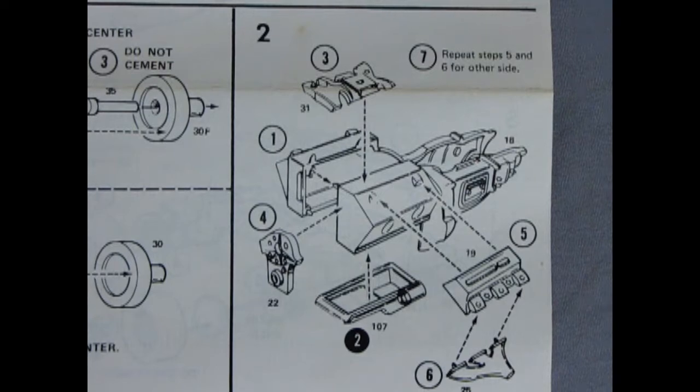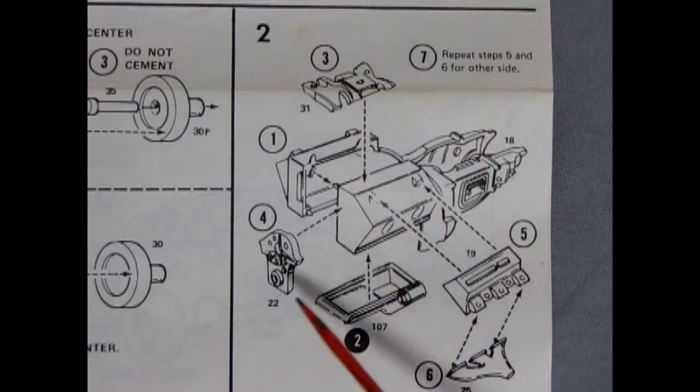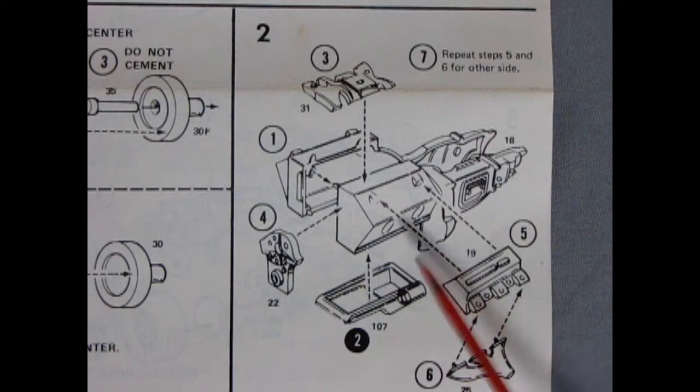Next we can take a look at our engine block. We've got our right and left hand sides as well as our transmission and our intake manifold, front timing cover, our oil pan, cylinder heads, and our exhaust manifolds.